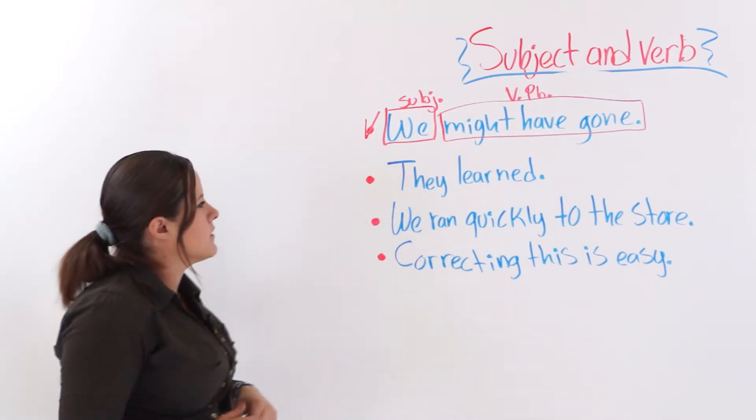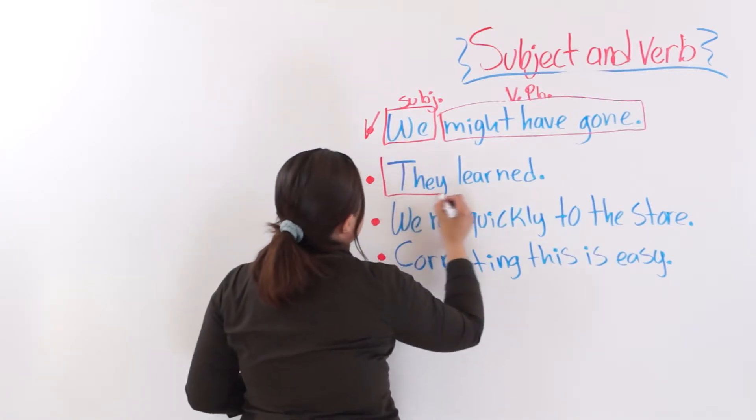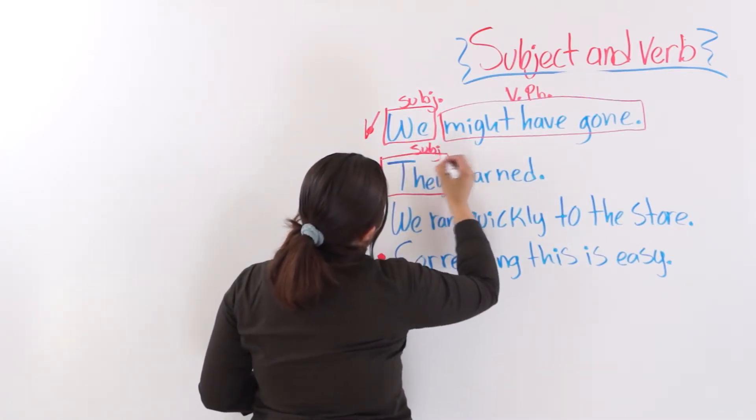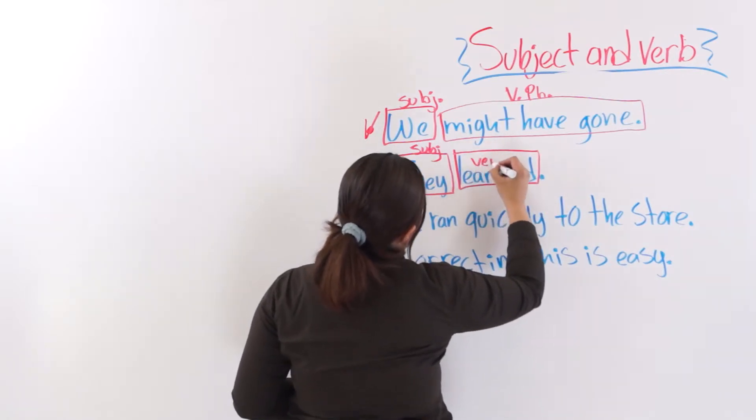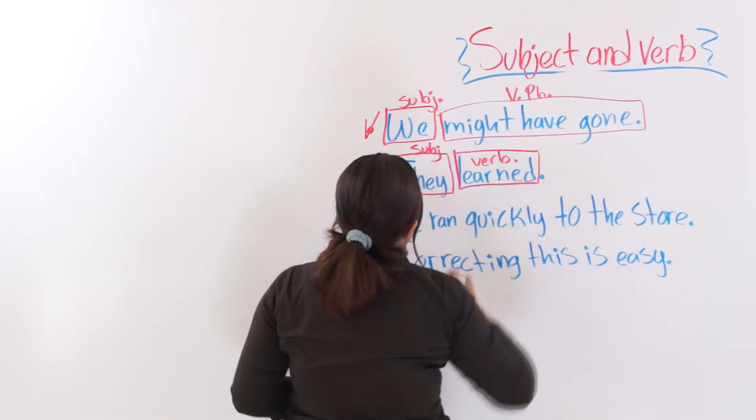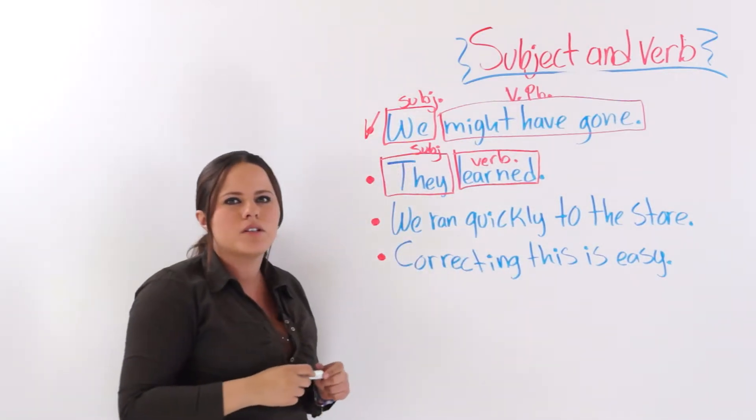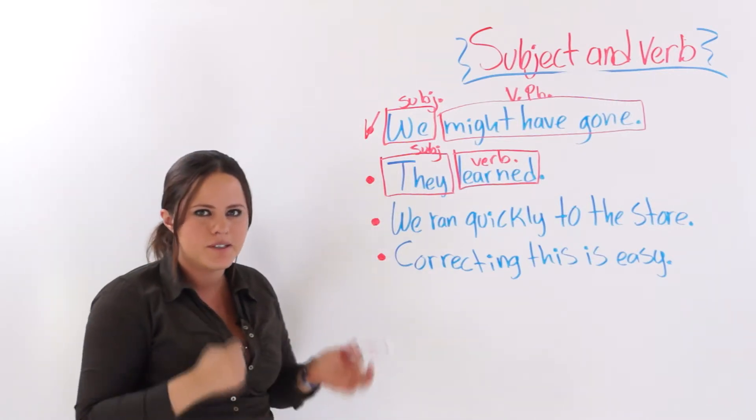Right? The next one says, they learned. They learned. We have a subject. And we have the verb. Verb. So this makes perfect sense. You don't need to complement it. It could also be called an independent clause. Right?